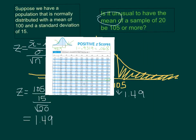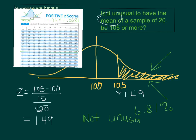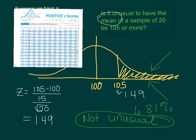So in our tail our probability here is 6.81%. We are greater than 5%, so we are not unusual. As we had a larger sample, it wasn't as unusual for our mean to be a particular value. So remember: if you are looking to determine whether something is unusual, if you have a probability of less than 5% then you are unusual. If you are greater than 5%, then you are within the usual bounds.